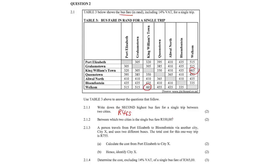Between which two cities is the single bus fare 350 rand? Where's 350? It's here — that's Queenstown and King Williamstown. So the answer is Queenstown and King Williamstown.